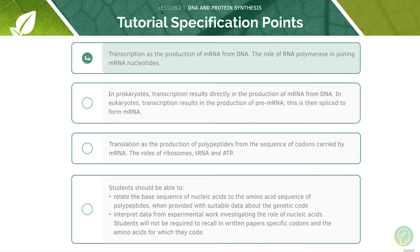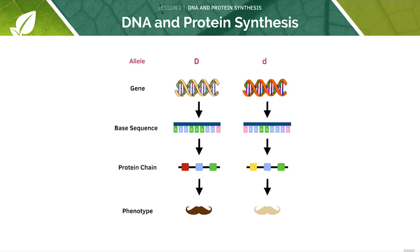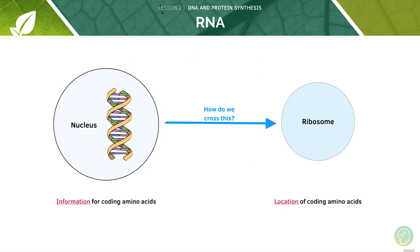We'll start off by looking at transcription. Protein synthesis is the process by which the base sequence in genes is used to make polypeptides. It's useful to understand how we go from genes to characteristics. Alleles are essentially different versions of genes. The gene has a specific sequence of bases which is used to make the protein chain, and the proteins of the body determine these characteristics. The information to code amino acids and make proteins is in DNA. However, protein synthesis occurs in ribosomes. The DNA is too big to move out of the nucleus, so how does this information get to the ribosome?